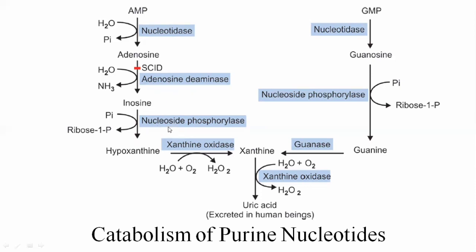Third, there is removal of the glycosidic bond linkage carried out by nucleoside phosphorylase. Unlike GMP, adenosine cannot be used directly as a substrate for nucleoside phosphorylase, so adenosine is first converted to inosine. Fourth and fifth, hypoxanthine is converted to xanthine and then to uric acid by xanthine oxidase, which adds oxygen groups at each step. Uric acid is the soluble end product, excreted from the human body.